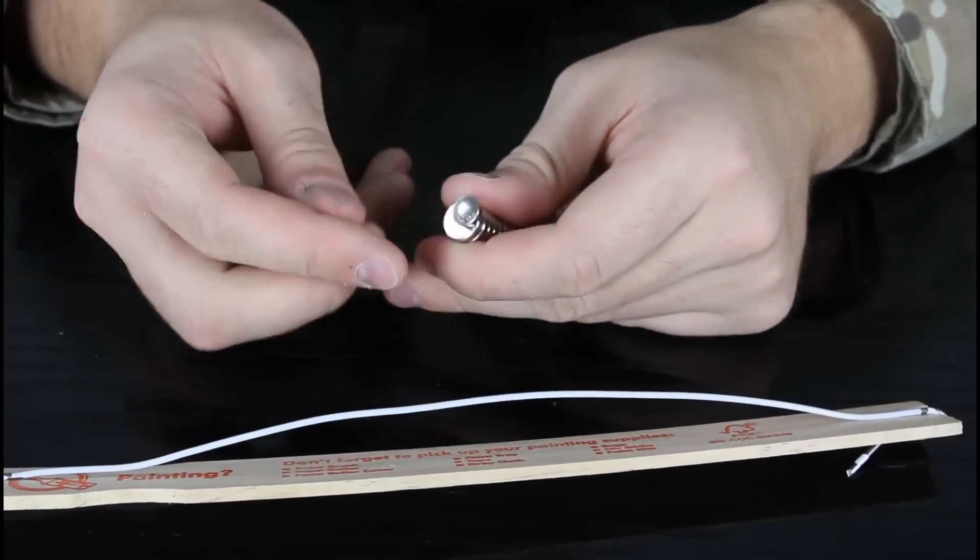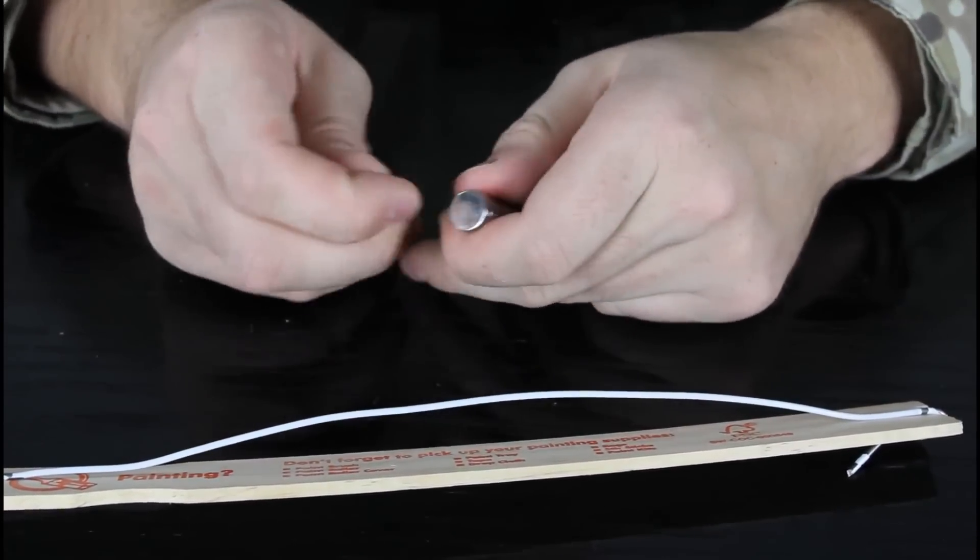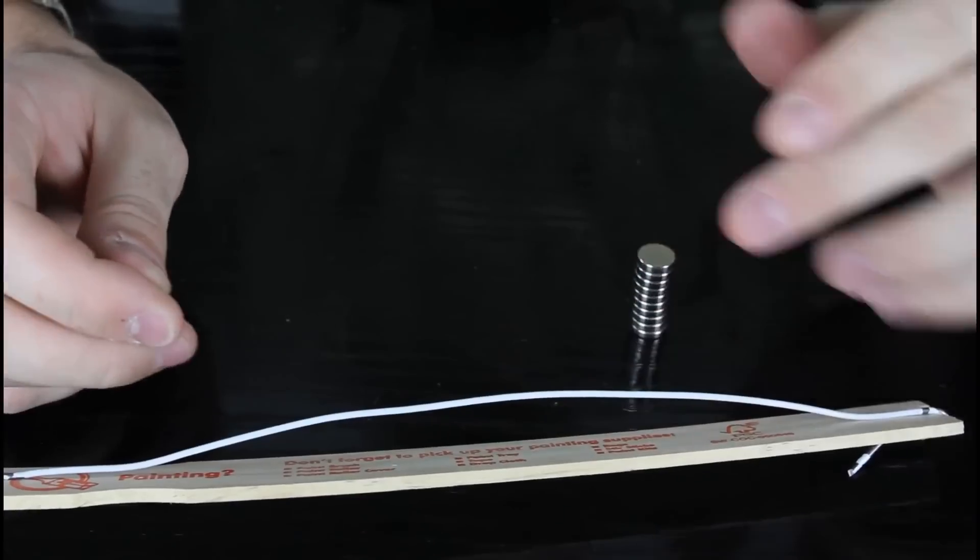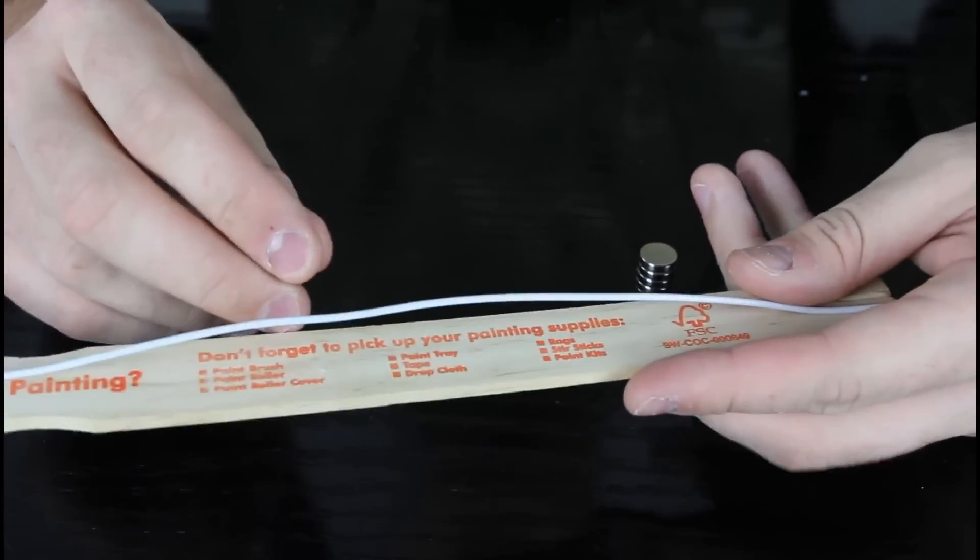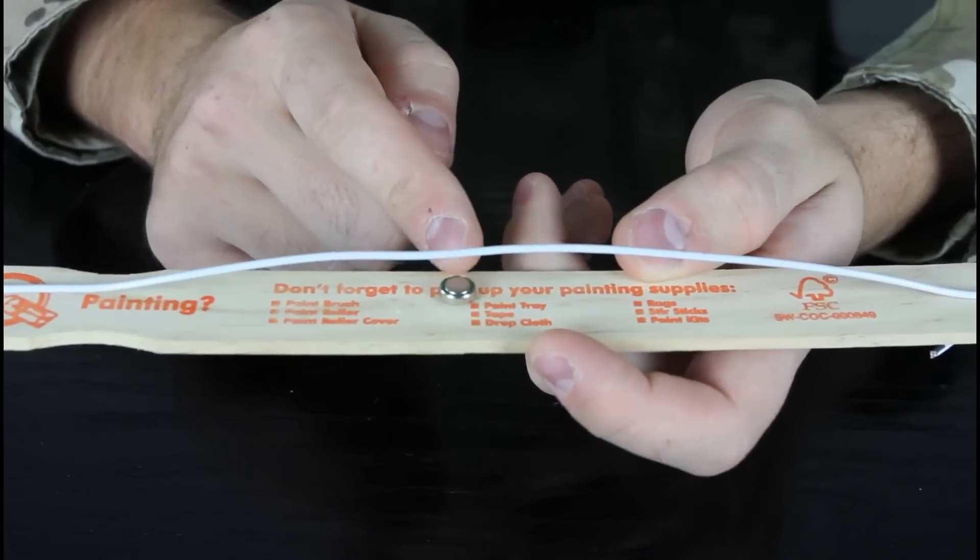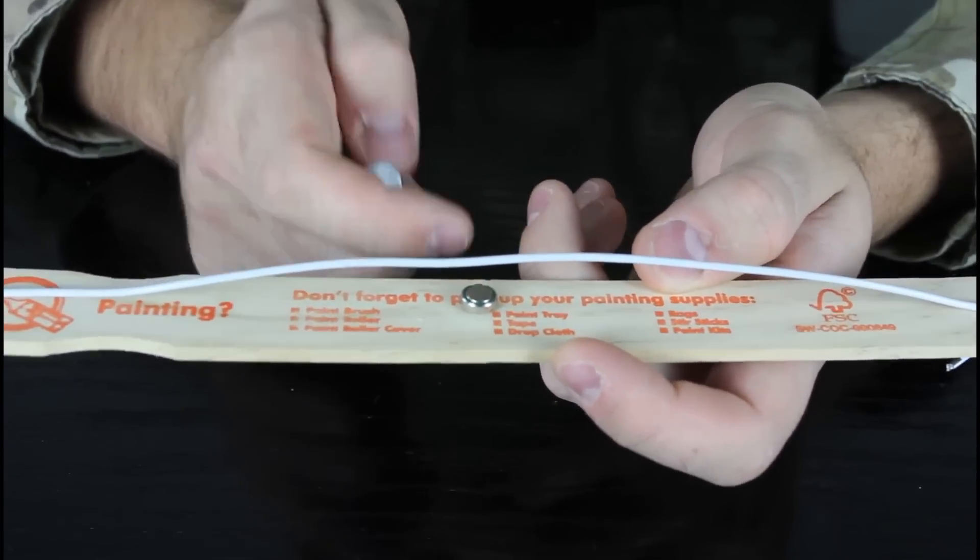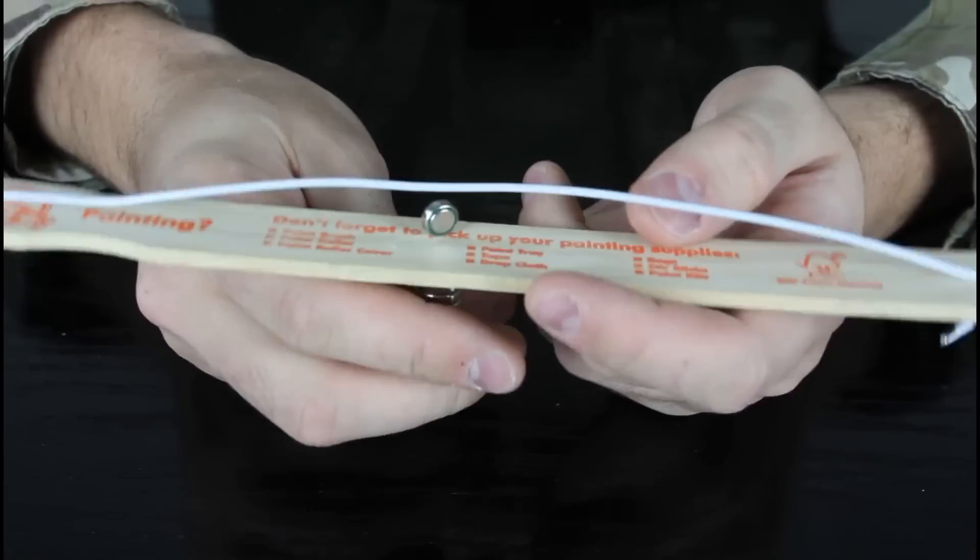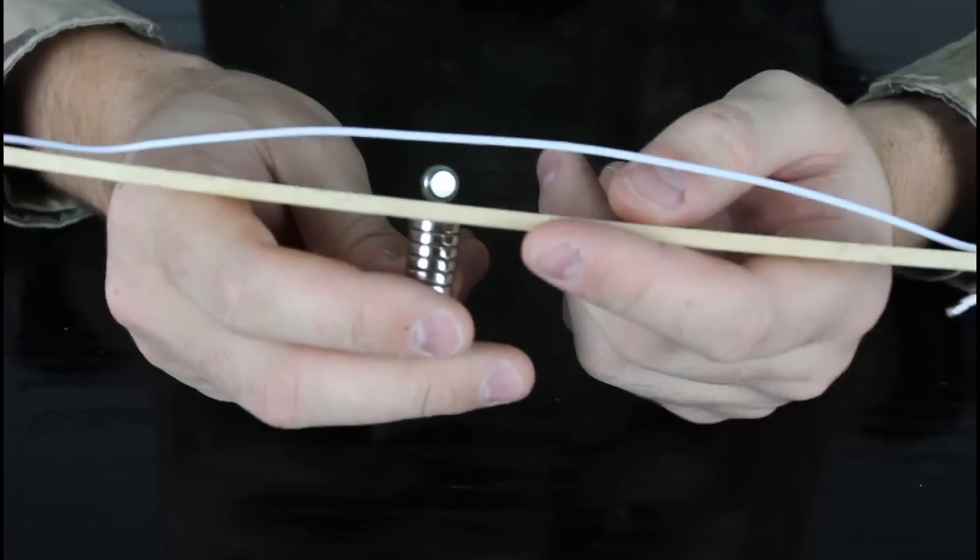We got a small battery right here. You see this is our Neodymium Magnet. They're really strong. The strongest magnets in the world. So we're gonna put this small battery on top of a piece of wood or a ruler and put the magnet on the bottom like that.